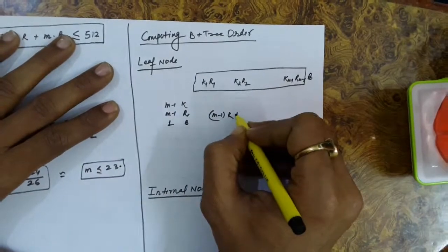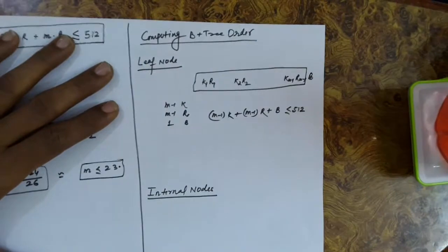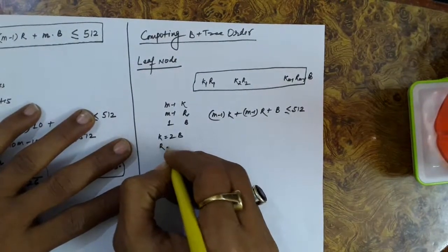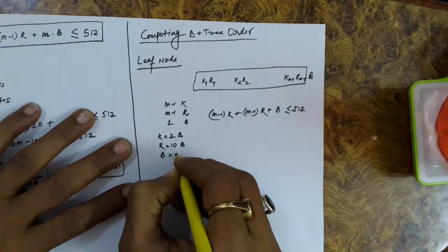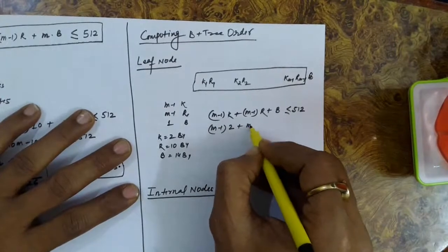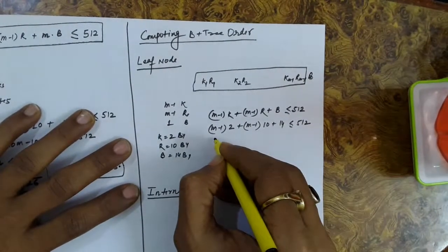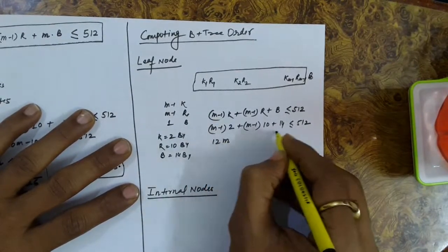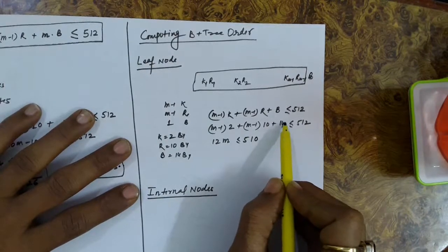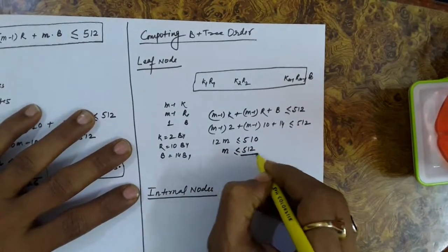So: (m-1) key values + (m-1) record addresses + one block address ≤ 512 bytes. If every key is 2 bytes, record addresses are 10 bytes, and block addresses are 14 bytes, we get: (m-1)×2 + (m-1)×10 + 14 ≤ 512, which simplifies to 12m ≤ 510, so m ≤ 512/12.